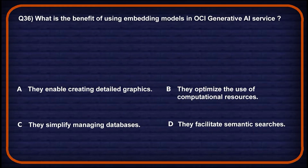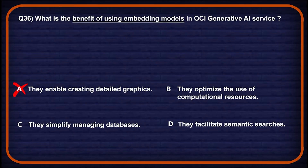Let's move on to question number 36: what is the benefit of using embedding models in OCI Generative AI service? Option A: they enable creating detailed graphics — embedding models are used for representation, not image generation, so wrong choice. Option B: they optimize the use of computational resources — efficiency is a secondary effect, not a primary benefit, so wrong choice again.